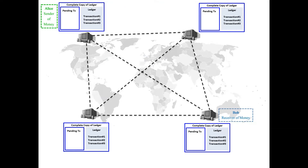Here we have a blockchain network. In this blockchain network, there are 4 nodes — 4 computers — which are distributed across the whole world, and they are connected with one another. These 4 nodes have created a blockchain network, which means there is no trusted third party or central entity.